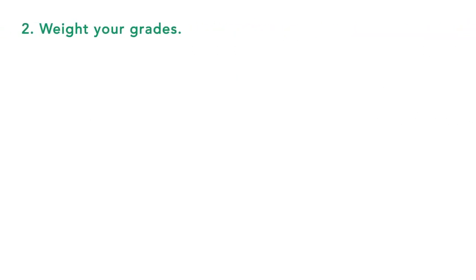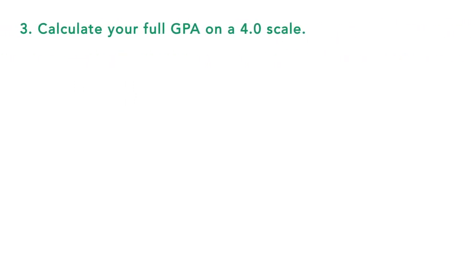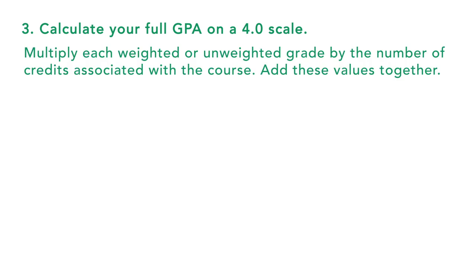Step one is to compare your grades in each individual class to a 4.0 scale. You'll want to go through each class you've taken and find the GPA value of the grade that you achieved in that class. On screen, you're going to see a chart with the grades and the GPA values to get you started. You can also find a copy of this chart in our GPA converter tool, linked in the comments below this video. Step number two is to weight your grades — add a full point to any honors or AP courses. For example, an A, normally a 4.0, would become a 5.0 for an AP class.